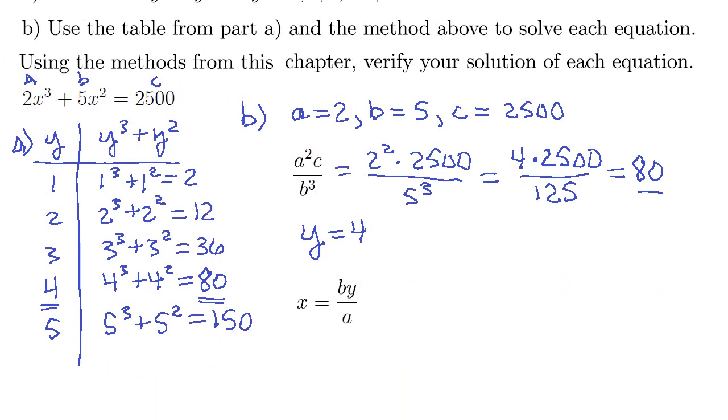So then our x here is going to be b, which is five, times our y, right there, four, and then divide by a, which is two. So twenty divided by two is ten. So ten is the solution to that equation.